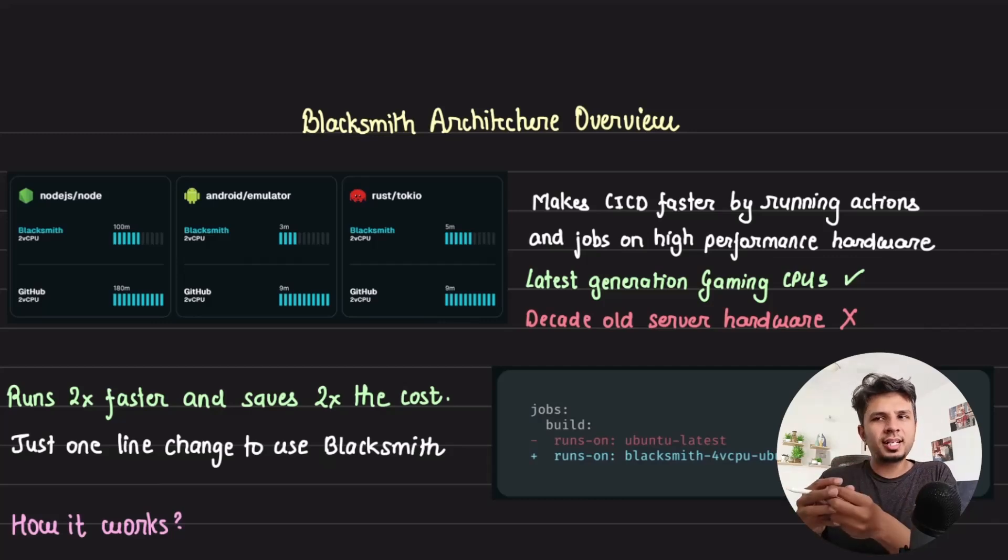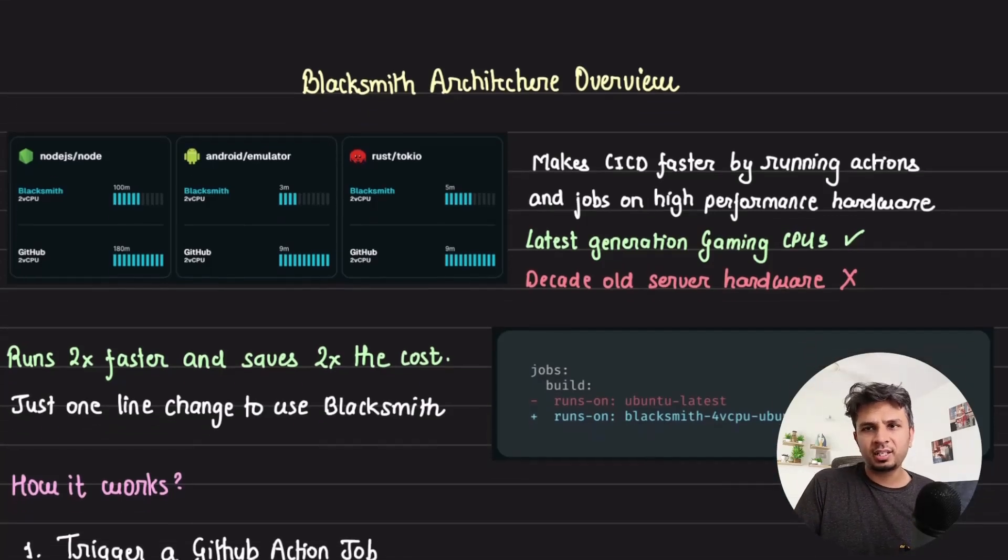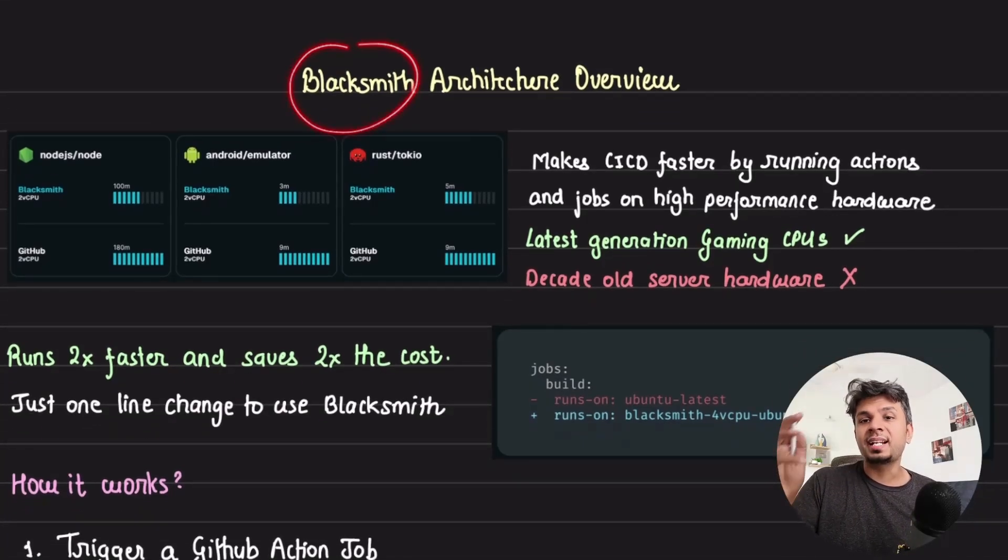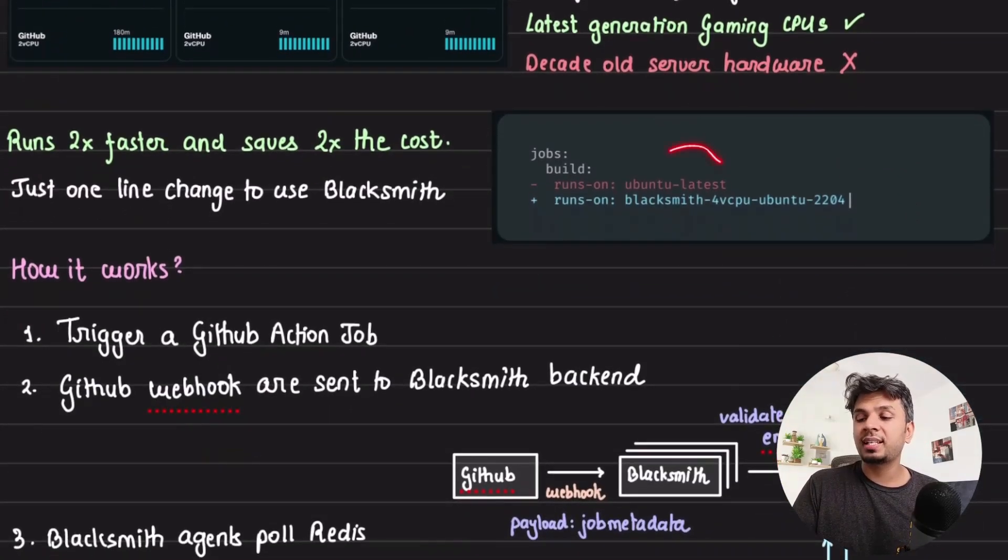So CI/CD is something that we all set up to test the code, build artifacts and deploy our changes. In this video, we explore the architecture and internals of Blacksmith that runs your CI/CD action jobs twice as fast, slashing your cost by half with just a single line of code change.